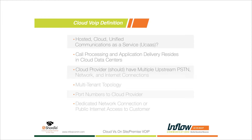When looking at a cloud provider, there are key attributes to consider. They should have multiple upstream connections to the public switched telephone network, redundant network and internet connections, and generally a multi-tenant topology — a standard hardware and software infrastructure where your organization exists as a logical or virtual image, or tenant, on that system.